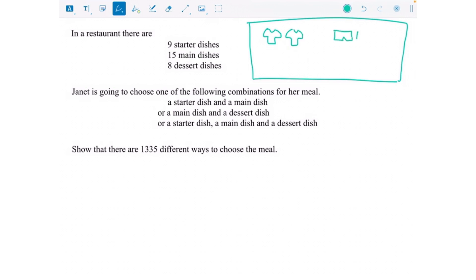And three pairs of shorts. How many different outfits could I wear? Well, I could wear this t-shirt with the first pair of shorts, or I could wear this t-shirt with the second pair of shorts, or I could wear that t-shirt with the third pair of shorts, so there's three outfits.